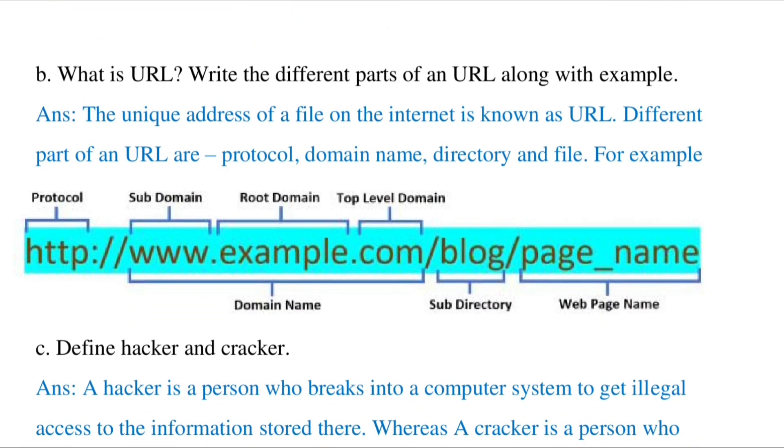What is a URL? Write the different parts of a URL. A URL is the unique address of a file on the internet, and the different parts are protocol, domain name, directory, and file.